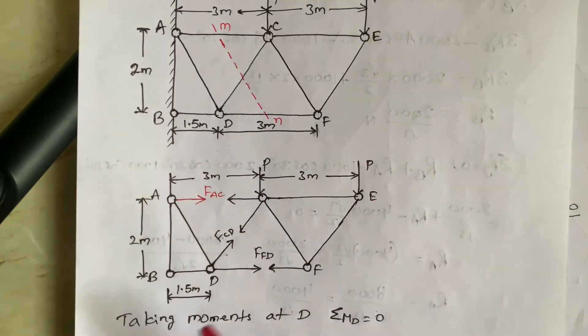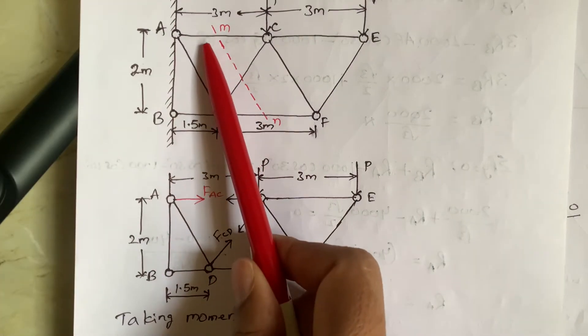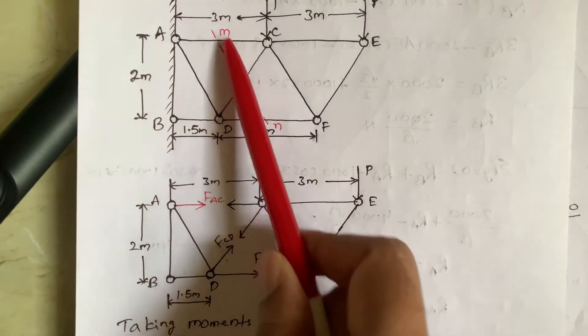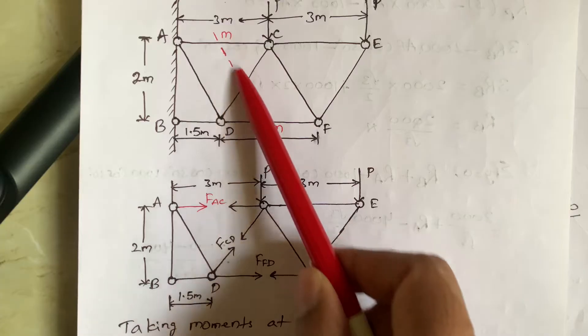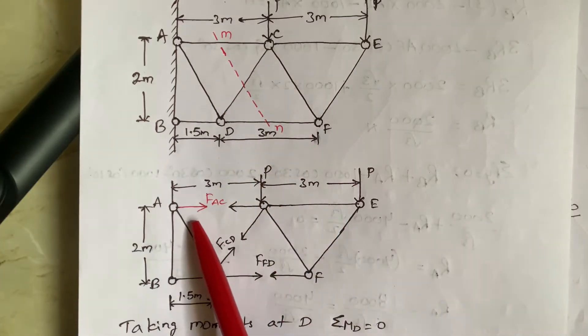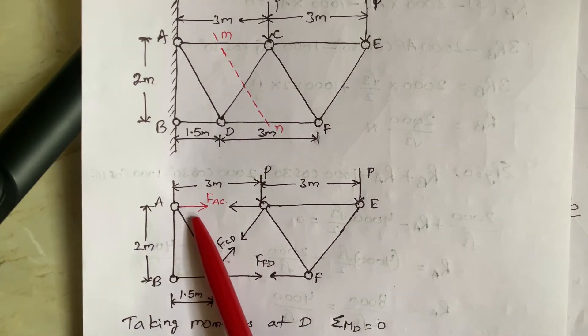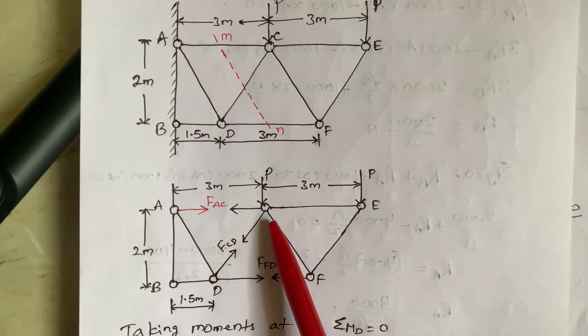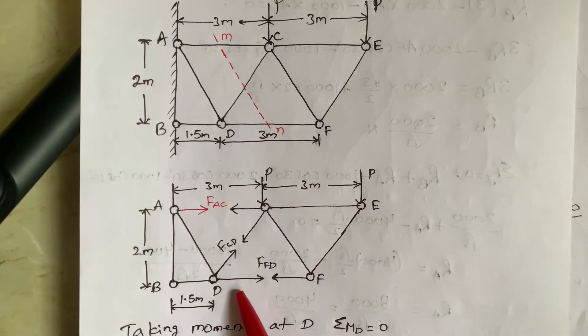So here I am passing the section MN. I am cutting the section here MN. So that here it is AC and DC and DF.